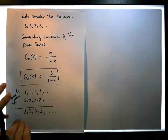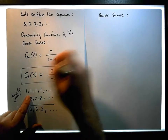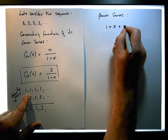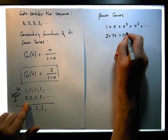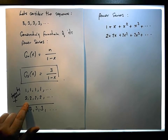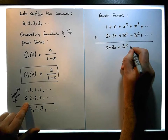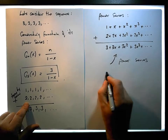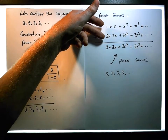More importantly, when we look at the power series of both sequences: g_1(x) is 1 plus x plus x squared plus x cubed all the way, and g_2(x) is 2 plus 2x plus 2x squared plus 2x cubed all the way to infinity. We can see that when we add these two power series together, we end up with 3 plus 3x plus 3x squared plus 3x cubed and all the way down, which is the power series for 3, 3, 3, 3, and so on.